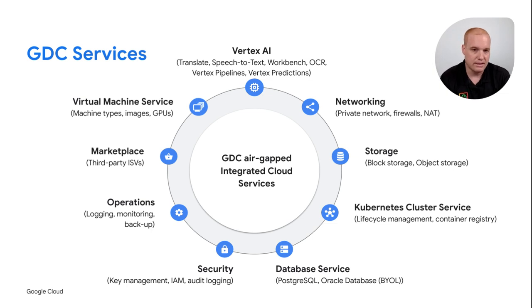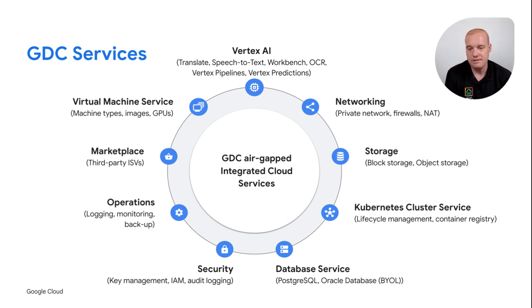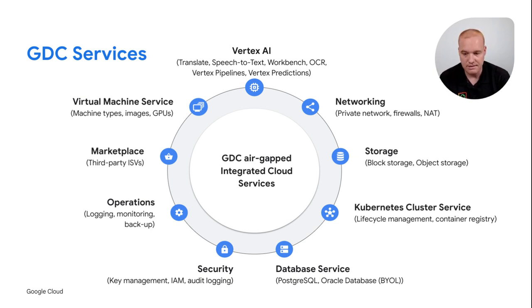GDC offers a wealth of industry-leading services from Vertex Artificial Intelligence, which provides translation, speech-to-text, optical character recognition, and various AI and ML features. Networking with private networking, VRFs, firewalls, and network address translations, file object and block storage, fully managed Kubernetes, databasing services from PostgreSQL to Oracle and AlloyDB, a wealth of security features and customer-managed key identity and access management, various logging technologies, operations via Grafana providing logging, monitoring, and performance. GDC Marketplace allows you to bring in best-in-breed third-party software offerings as BYOL into your AirGap clouds, and virtual machines for various types of machines, images, and GPU-enabled processing.